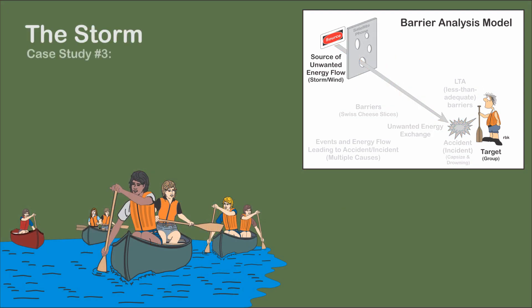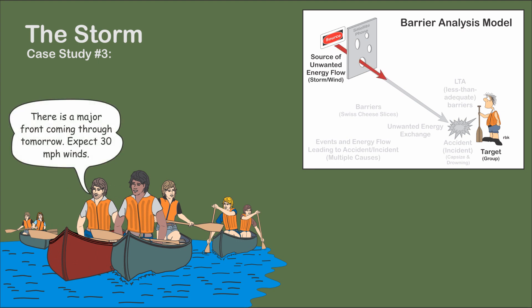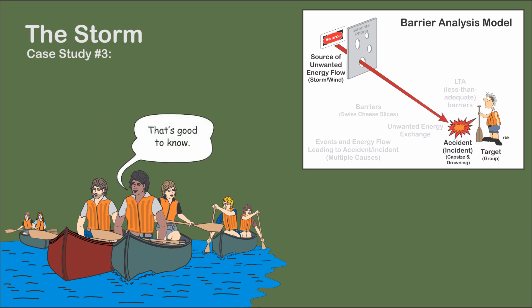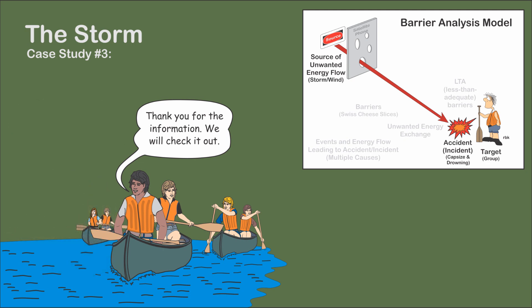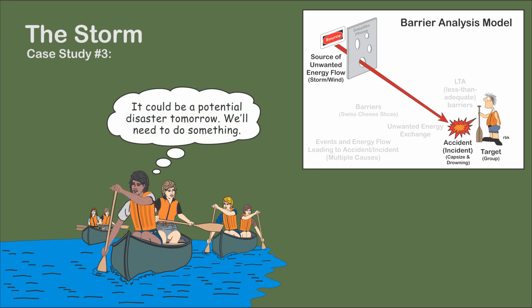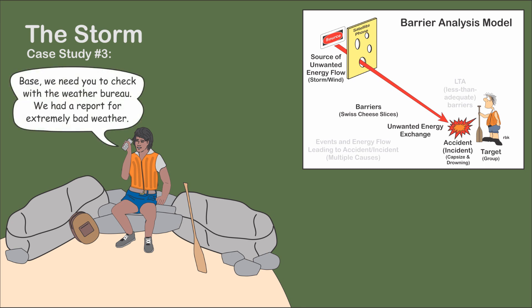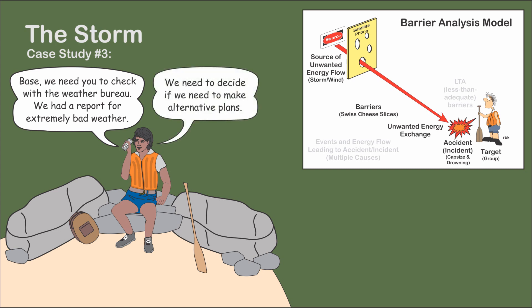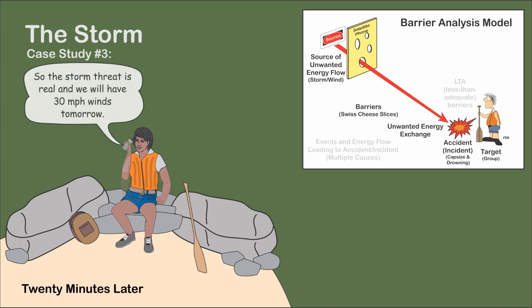A youth group is doing a multi-day backcountry canoe trip that includes large expanses of open water. They are paddling toward their next campsite when a solo paddler catches up with the group and informs the leader that a major front was moving through the area tomorrow — expect 30 mile-an-hour winds and possible microbursts. The leader thanks the paddler. During lunch, he grabs a day pack, goes to a private area, pulls out his satellite phone, and gives BASE a call to inquire about the weather report. BASE indicates to call back in 20 minutes. Twenty minutes later, the storm warning is confirmed.